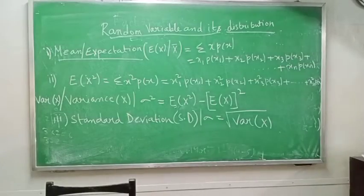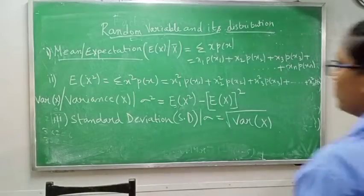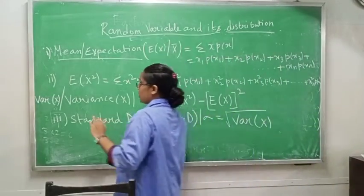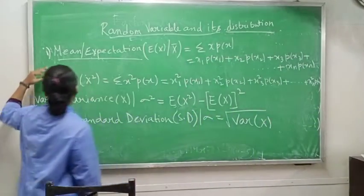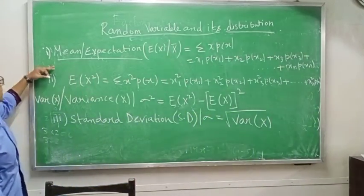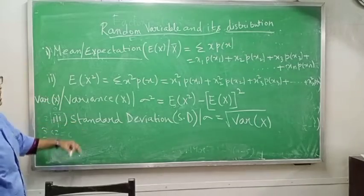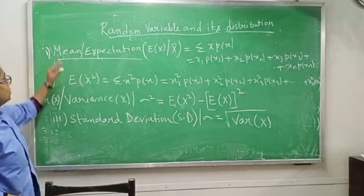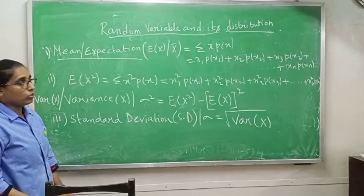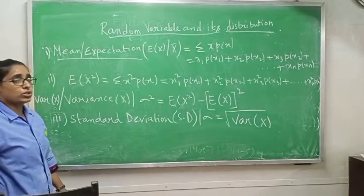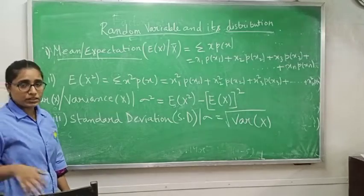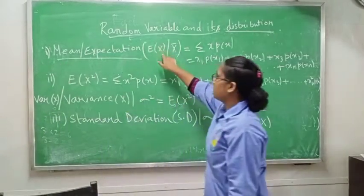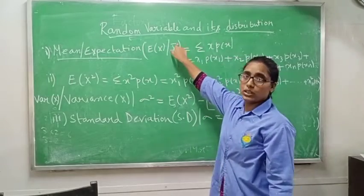Class 12, now I am doing Part 2 of random variable and its distribution. In this one, we will learn about mean, variance and standard deviation. Mean is also known as expectation, which is denoted by E(x) or x-bar.